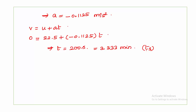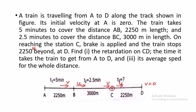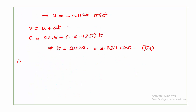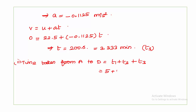The question asks for the time it takes the train to get from A to D. The total time is T1 + T2 + T3: that is 5 minutes plus 2.5 minutes plus 3.333 minutes, giving a total of 10.833 minutes.